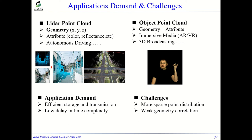LiDAR point clouds are applied in autonomous driving. They are sparsely distributed at large-scale scenes, while object point clouds usually simulate people in emission medium, and the density of object point clouds is greater than that of LiDAR point clouds.